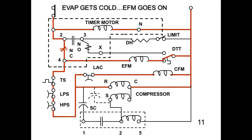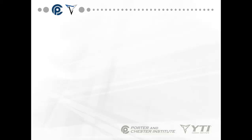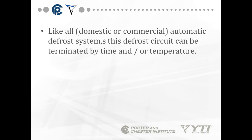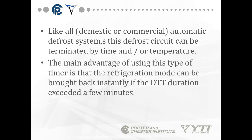The evaporator gets cold. The EFM comes back on. Notice my temperature is dropped. This is temperature because you see the little box-shaped line under it. Temperature is dropped. DTT has moved back down to complete the circuit from pin 4 to the evaporator fan back to line 2 or neutral. DTT is switched into the down position. So like all domestic and commercial automatic defrost circuits, this defrost can be terminated by time and or temperature. The main advantage of this is that the refrigeration mode can be brought back instantaneously if the DTT duration exceeded a few minutes.